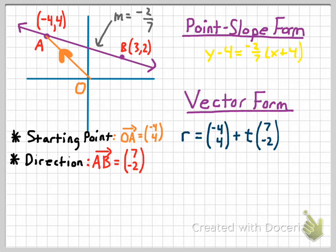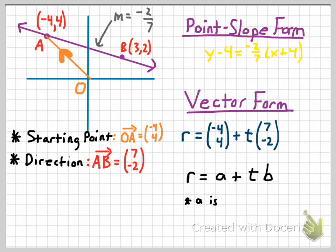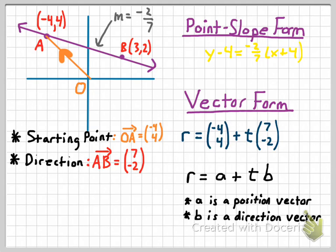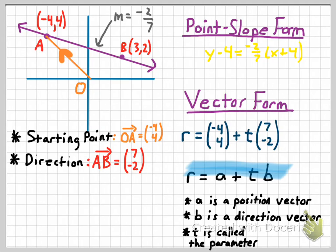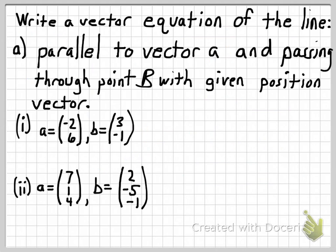The general form you're going to use when writing the vector form of a linear equation is: R equals A plus T times B, where lowercase A is a position vector that tells you how to get to your starting point from the origin, and B is a directional vector. T is what's called a parameter — not related to vectors, just a constant value. So R equals A plus T times B is the vector form of a linear equation.